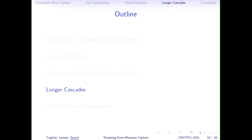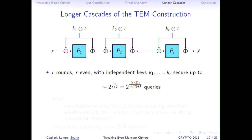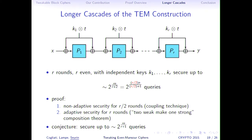We also have results for longer cascades. For R rounds (R even), the construction is secure up to 2^(Rn/(R+2)) queries. This is not as tight as for two rounds. We conjecture the real security bound is 2^(Rn/(R+1)). We believe the weaker bound arises because the H-coefficients technique becomes too complicated for larger R, so we instead use the coupling technique, which handles non-adaptive attackers well but gives loose results for adaptive attackers. At least this shows that asymptotically, increasing the number of rounds yields the optimal bound of 2^n queries.